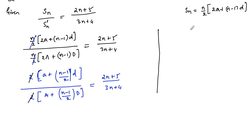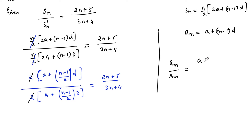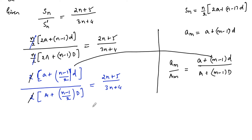We know that the mth term is equal to a plus m minus 1 into d — that is the general term. So the ratio of their mth terms, let us write a_m upon capital A_m, which is equal to a plus m minus 1 into d upon capital A plus m minus 1 into capital D. To find these values, let us compare a plus n minus 1 upon 2 into d with a plus m minus 1 into d.